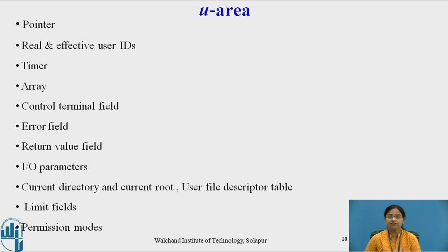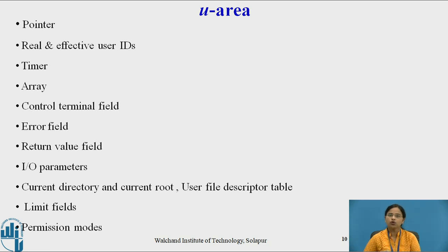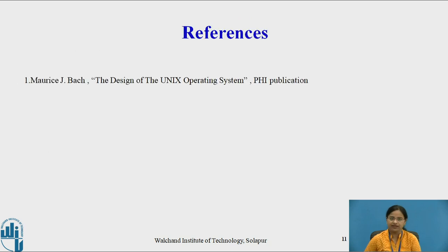This is all about process state transitions and the two kernel data structures: process table entry and U-area. Thank you.